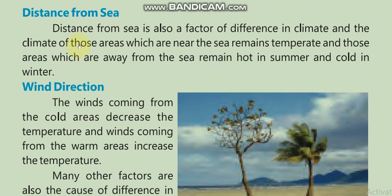Distance — yani ka samandar se fasla. Distance from sea is also a factor of difference in climate. The climate of those areas which are near the sea remains temperate, and those areas which are away from the sea remain hot in summer and cold in winter. Samandar se fasla hota hai — yeh bhi ek climate mukhtalif hone ki ek wajah hai.